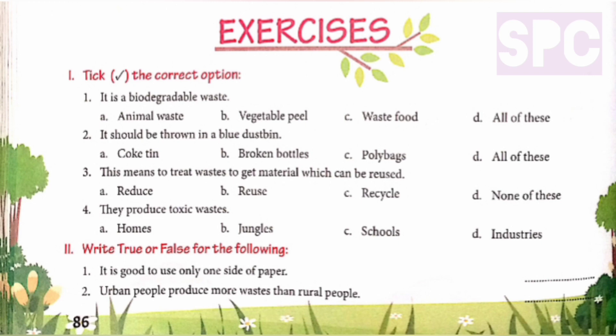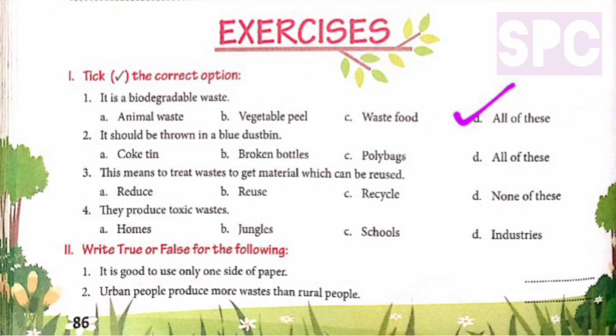Question number one: Tick the correct option. Part one - Which is a biodegradable waste? Options: animal waste, vegetable peel, waste food, all of these. The answer is option D - all of these. Animal waste, vegetable peel, and waste food are all biodegradable.